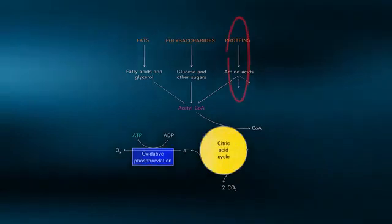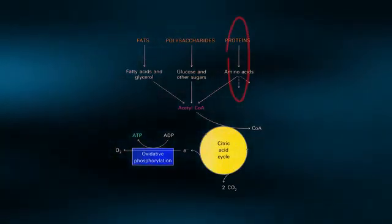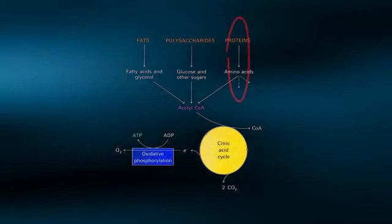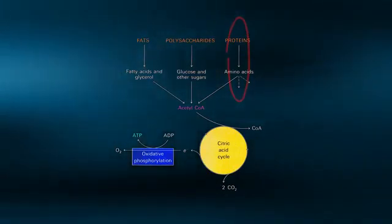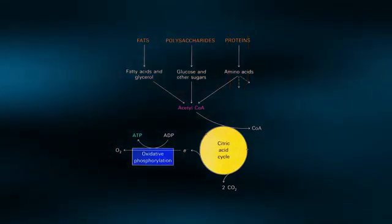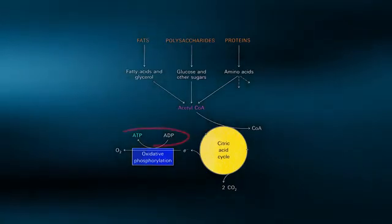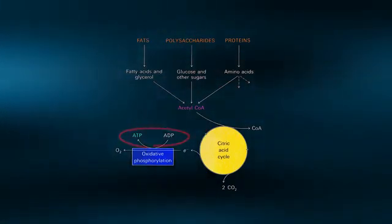Proteins can actually be broken down or degraded during a single bout of exercise with their resulting amino acids being used for fuel. The carbon skeletons of certain amino acids can directly be used for ATP production in the mitochondria.